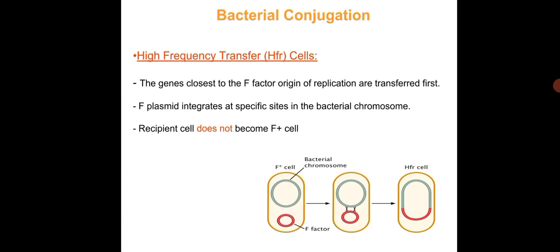During transfer from an HFR strain to an F− strain, genes closest to the F origin of replication are transferred first. Only part of the bacterial chromosome may be transferred, as it would take up to 100 minutes to transfer the complete genome, which is not feasible. The partial segment transferred must recombine with the recipient chromosome to be sustained, resulting in new phenotypes in the recipient bacterium. During HFR conjugation, the recipient cell does not become an F+ cell. Although conjugation is most frequently associated with gram-negative bacteria, it can also occur in gram-positive bacteria.